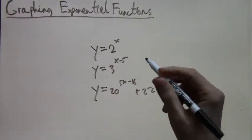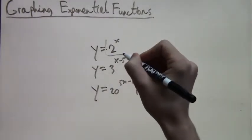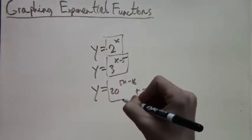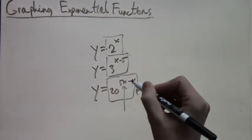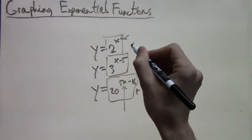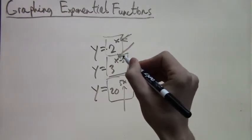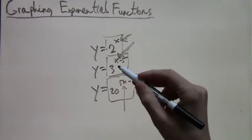All that matters is that in an exponential function you have a number to some xth power. So in the first case just the x power, in the second case x minus 5th power, third case 5x minus 16th power. But we have an x that we're taking as a power, and that is what we call an exponential function.